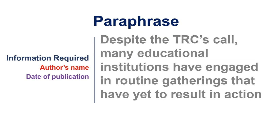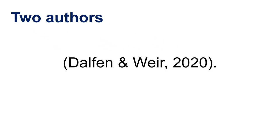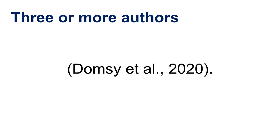For an in-text citation at the end of a paraphrase, add the author's last name, comma, and the date of publication. Surround in parentheses and follow by a period. For articles with two authors, separate each author's last name with an ampersand. Articles with three or more authors can be cited in text by listing the first author's last name and following it with et al. and a period, which means 'and others.'